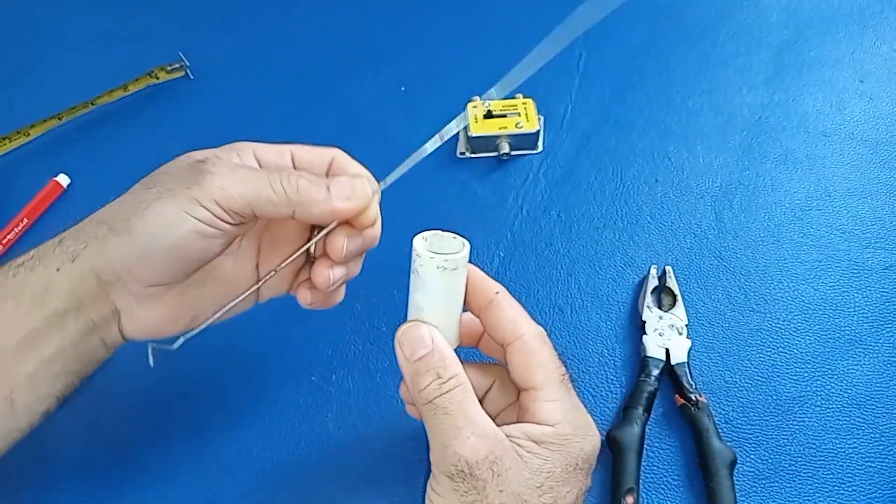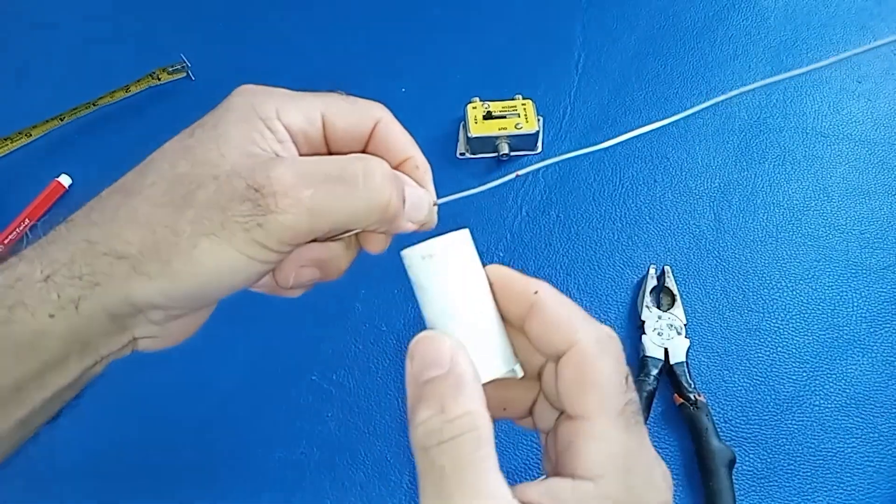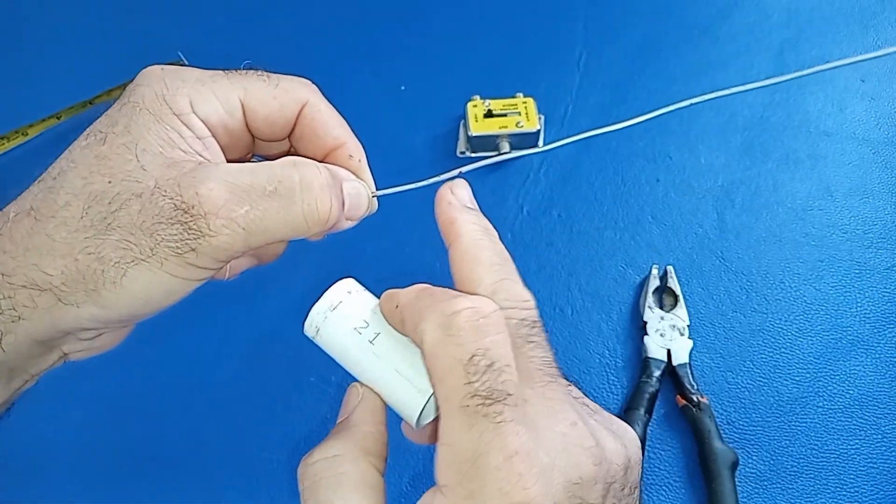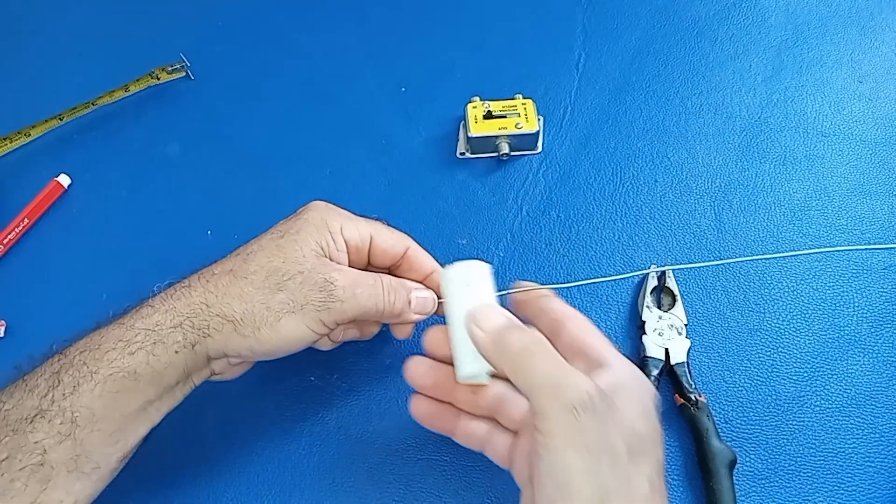Step three, forming the loop. Place the three-quarter inch PVC pipe in the center of the 3.2 centimeters mark. Bend the cable around the pipe, creating a circular shape.